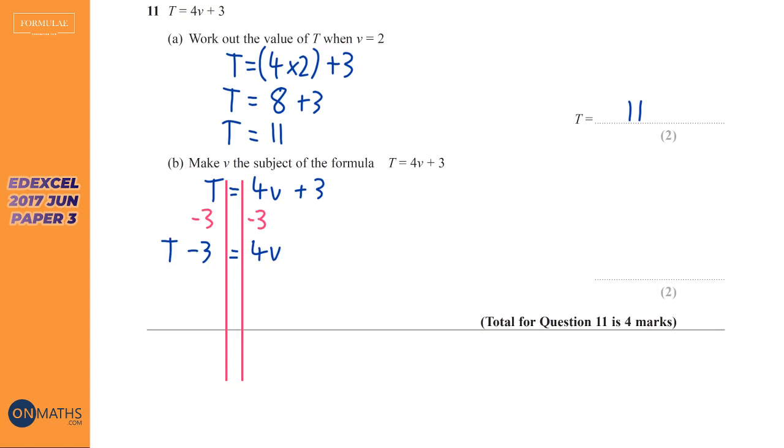Now what is that 4 doing to the v? Well it's a times 4 because it's next to it, times it by 4. So to get rid of it we need to divide by 4. So on the right hand side this is easy because it's just going to be v. But the left hand side is not so easy. Well what I see some students do sometimes is T minus 3 divided by 4—that will not give you any marks I'm afraid. It won't give you the two marks for the question.